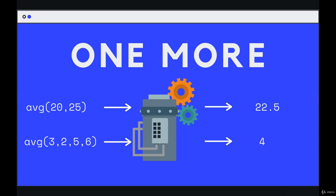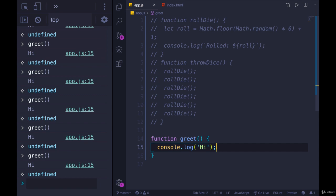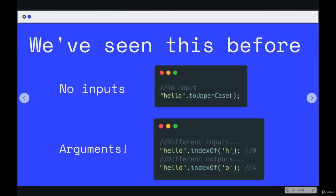We've already seen arguments quite a bit in the built-in methods we've been working with. Something like toUpperCase expects no inputs — it just uppercases something, kind of like our initial version of greet. But then we have things like indexOf, includes, splice, or slice, where we have to specify inputs. In the case of indexOf, we tell it what string we're looking for in 'hello', and we get different behaviors. If we pass in 'h', indexOf is zero; if we pass in 'o', we get indexOf four — we're specifying additional information.